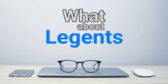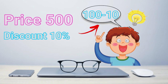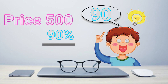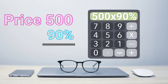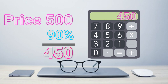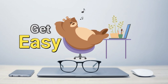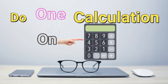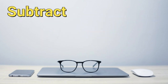So what about legends? How are they going to do it? They subtract 10 from 100 in their mind — without a calculator — which gives 90. It's so easy, even a class 1 kid can do it. After that, you just calculate 90% of the price to find the discounted price. Your life is going to get easier from now on — you only need to do one calculation on the calculator.